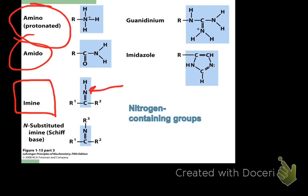Nitrogen must make at least three to four bonds. Three bonds means it has a lone pair of electrons; four bonds means it's protonated. There's a special N-substituted amine called a Schiff base — three bonds but with another carbon instead of hydrogen. Schiff bases are very important in catalysis. The amino acid that forms Schiff bases all the time is lysine — the only one that ends in amine.